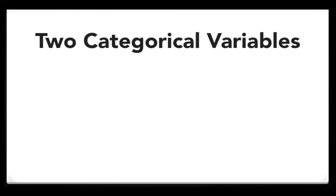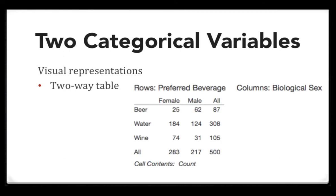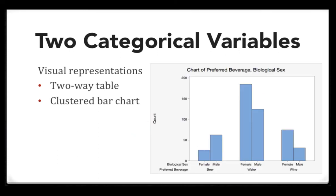For two categorical variables, in terms of a visual representation, you can construct a two-way table. A two-way table presents one variable as the rows and the second variable as the columns. You could also construct a clustered bar chart.